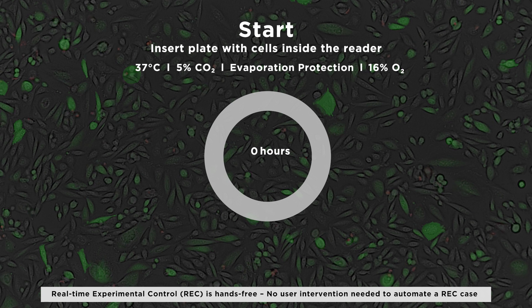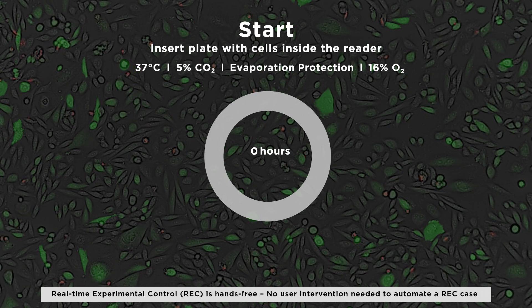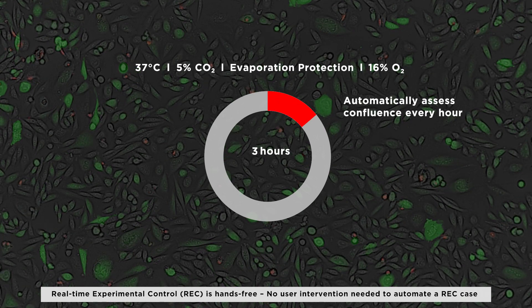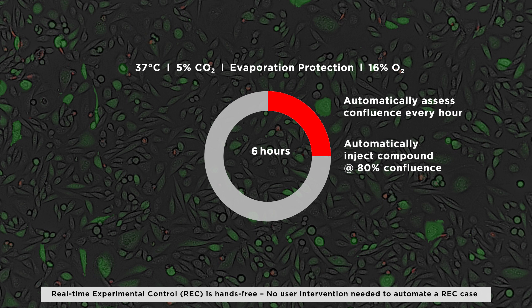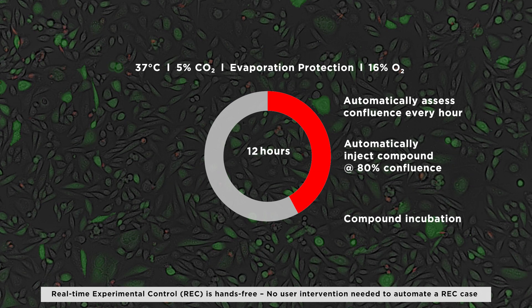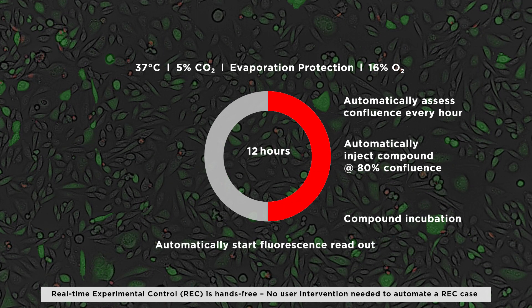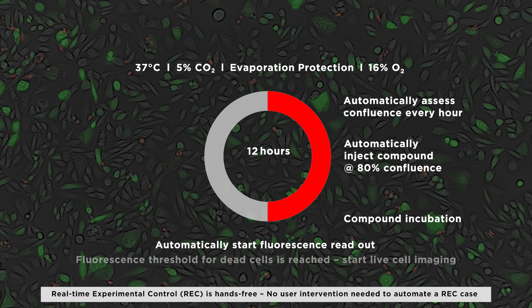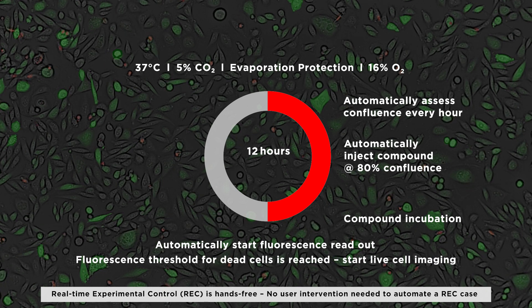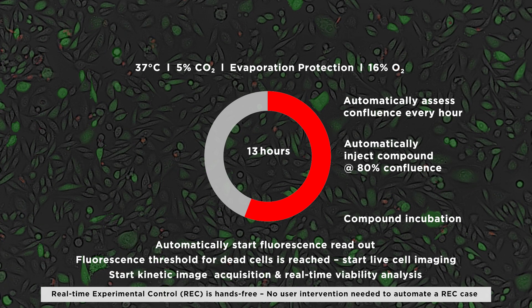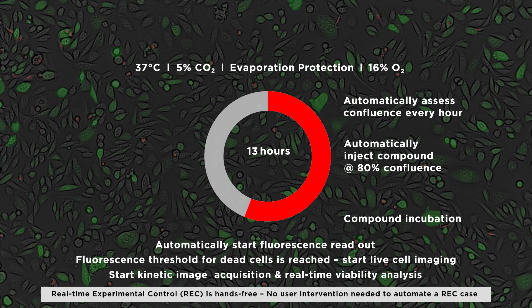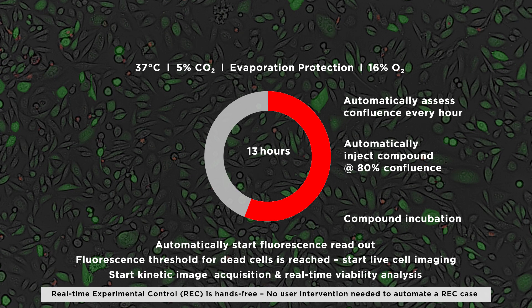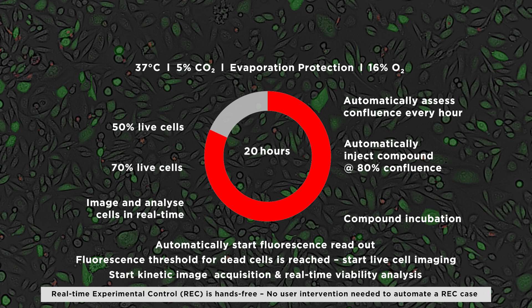To start: insert plate with cells inside the reader, assess confluence, inject compound, incubate compound, start fluorescence readout, start live cell imaging, start kinetic image acquisition and real-time viability analysis, image and analyze cells in real-time, and finish when 30% live cells is reached.